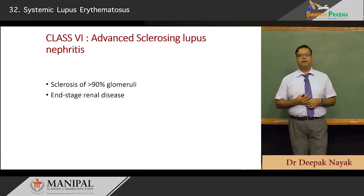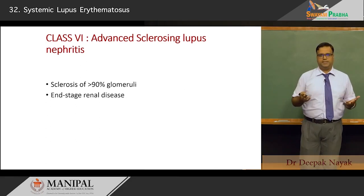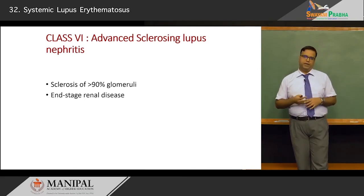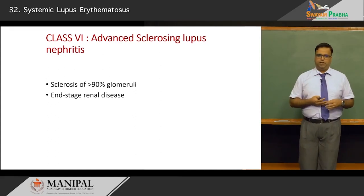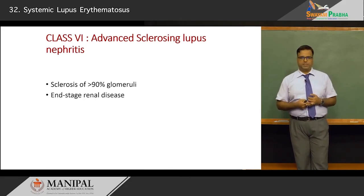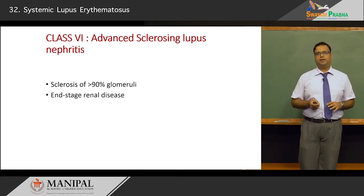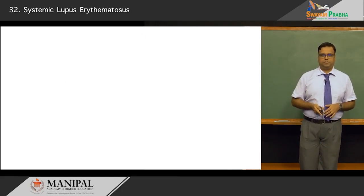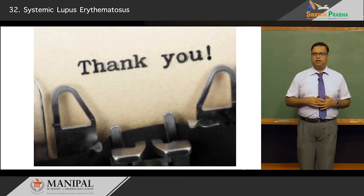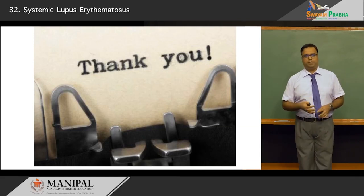Class six is advanced sclerosing lupus nephritis, where more than 90 percent of glomeruli have undergone sclerosis and are non-functional — this represents end-stage renal disease (ESRD), also called CKD class five. The patient requires hemodialysis or ultimately a renal transplant. SLE can therefore affect the kidney across a wide spectrum from minimal mesangial change to complete renal shutdown. This concludes the class on SLE; the key points are the pathogenesis, revised diagnostic criteria, and effects on multiple organs. Thank you and have a good day.